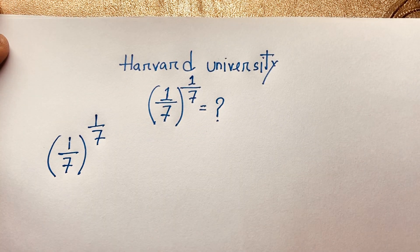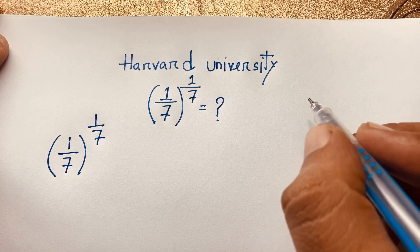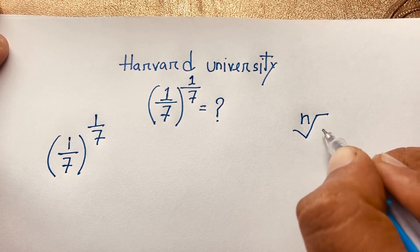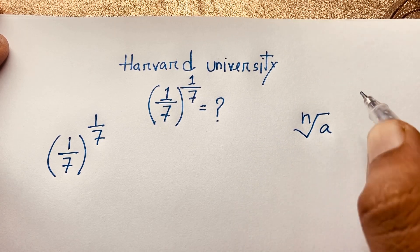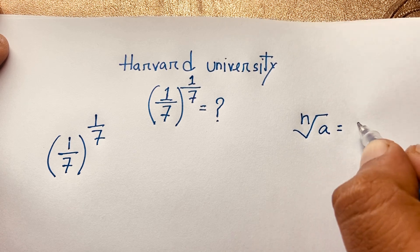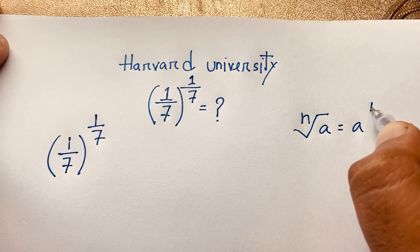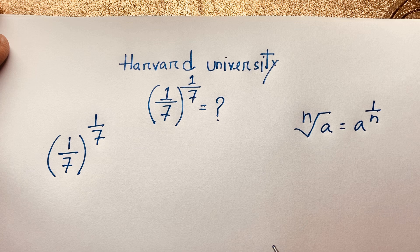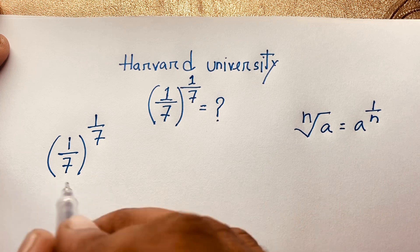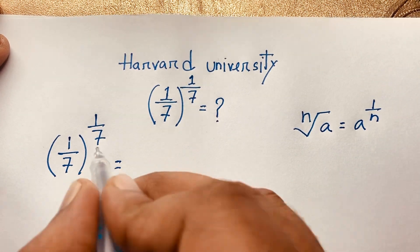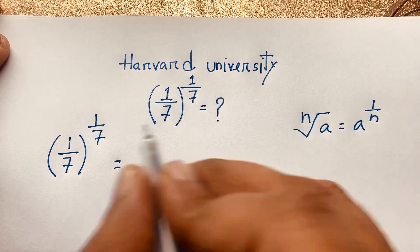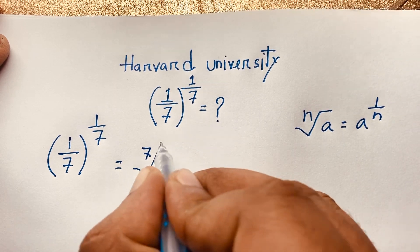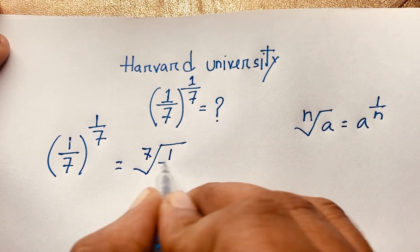We know the exponential law: n-th root of a equals a to the power 1 over n. According to this law, I can say this expression. Here n is 7, so it will be the 7th root of 1 over 7.